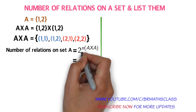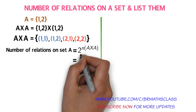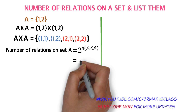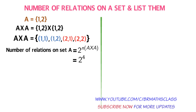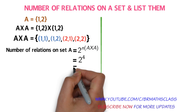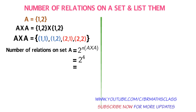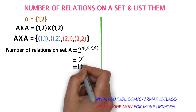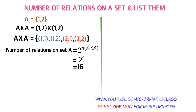So if set A has two elements, then A×A has four elements, and the number of relations on set A equals 2 to the power 4, which equals 16. Now we will list all the relations on set A.